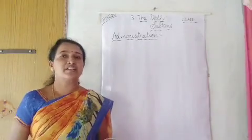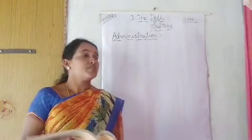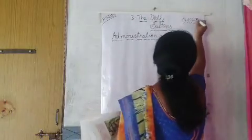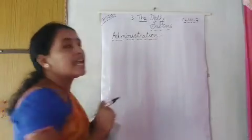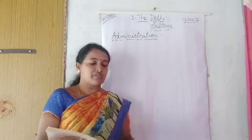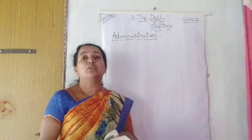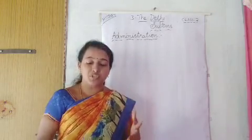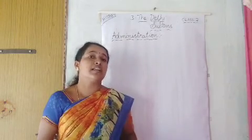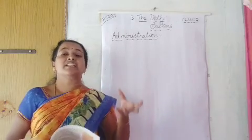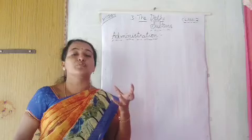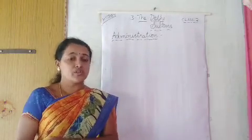Hello, good morning children, how are you all? Today in this video I am going to explain class 7 history 3rd chapter, the Delhi Sultans part 3. In the previous video you have learnt how the Sultans established their kingdom, how they developed their culture and language, Muslim culture, how they built different masjids and who were there to perform the ritual prayers.